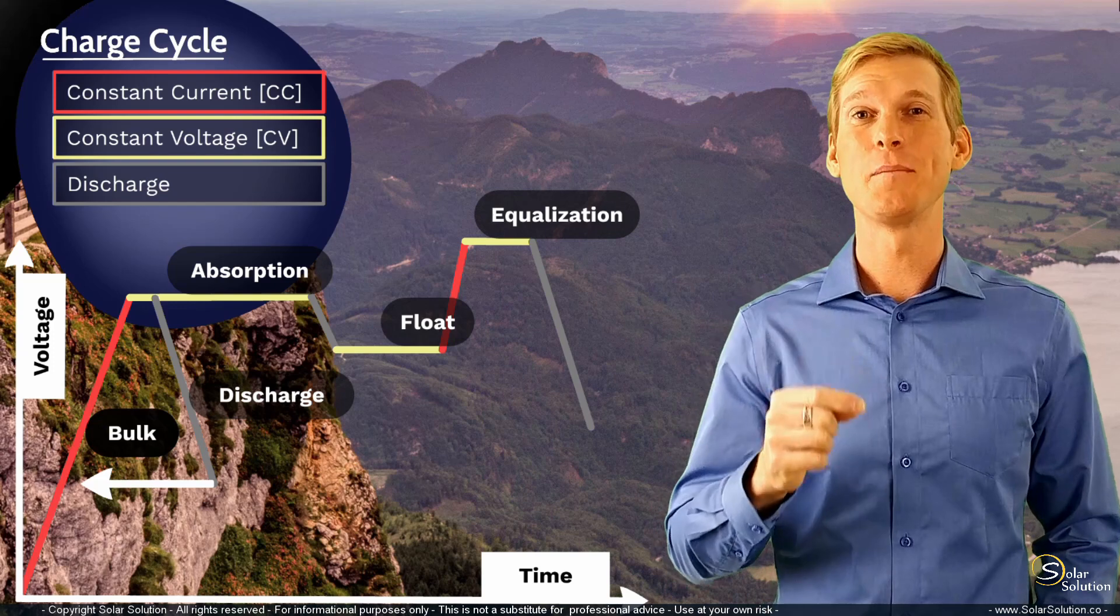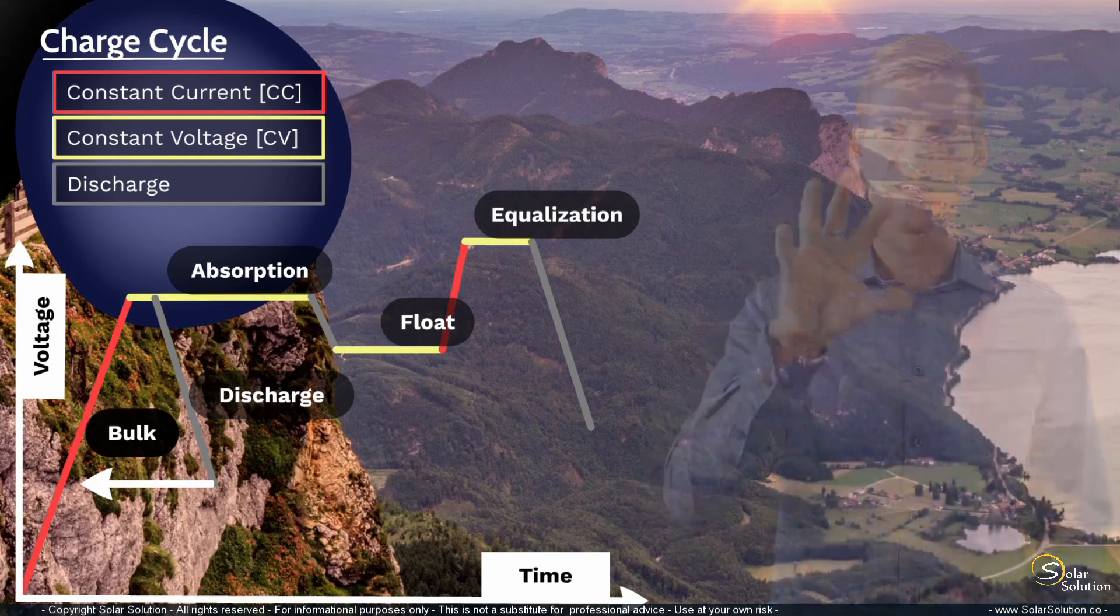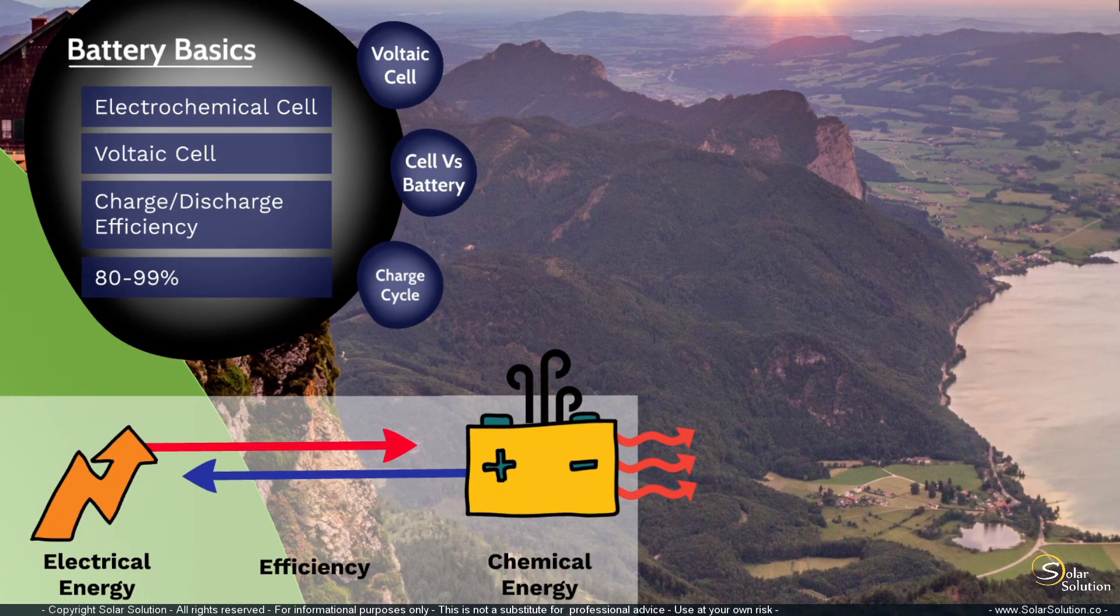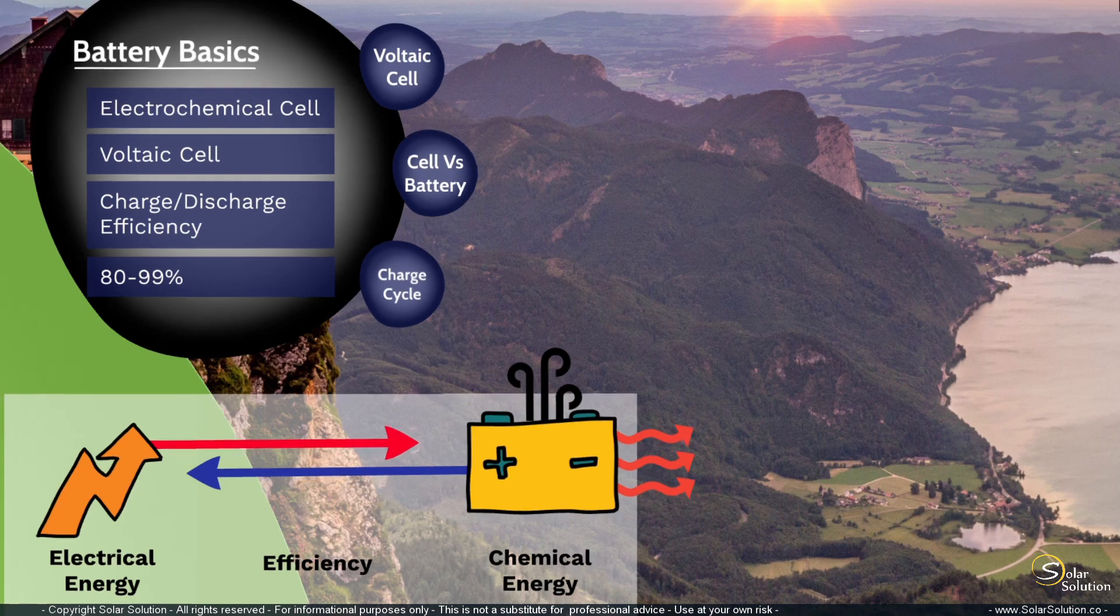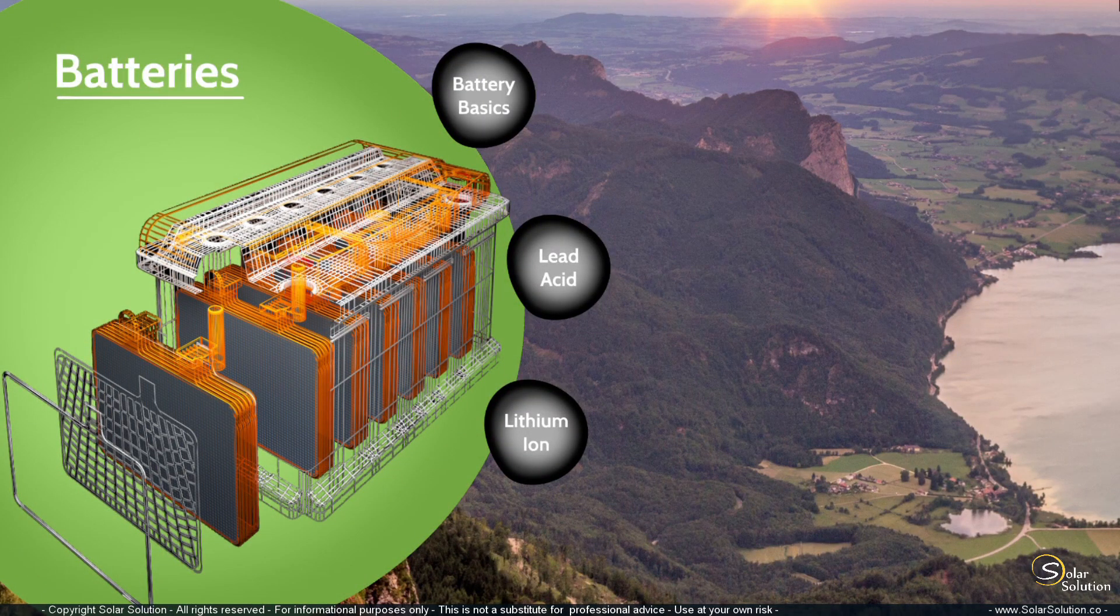So well done, you understand quite a bit about batteries now, so you've completed the section on battery basics. You understand the difference between the cells, the batteries and even the details about the charging cycle, what happens during the charging cycle of a battery. So now we're ready to move ahead to the next section in the chapter of batteries, which is regarding all the different types of lead-acid batteries.